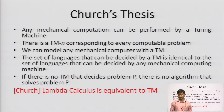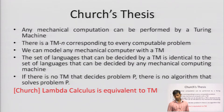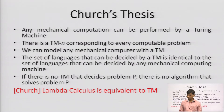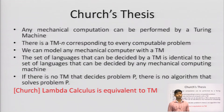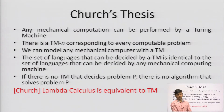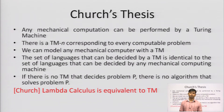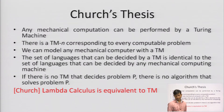If any algorithm or any computable function can be computed by Turing machines, it can also be computed by another effective method. The Church-Turing thesis says that any mechanical computation can be performed by the Turing machine. There is a Turing machine corresponding to every computable problem — we can model any mechanical computer with a Turing machine. If there is no Turing machine to decide the problem, there is no algorithm that solves problem P. Lambda calculus is equivalent to the Turing machine — whatever is computed by the Turing machine can also be computed using lambda calculus.